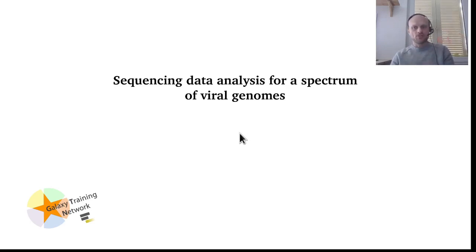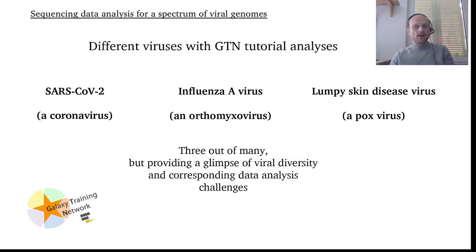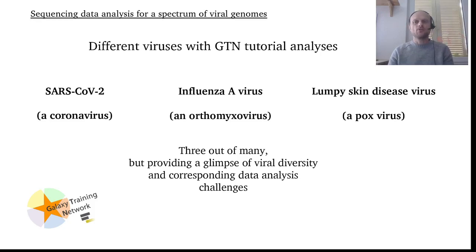The three viral pathogens with existing associated training in the GTN are SARS-CoV-2, Influenza A virus, and Lumpy Skin Disease virus — that's a pox virus infecting livestock animals. This is just three out of many viral pathogens you could potentially want to analyze with Galaxy, but it's a selection of rather important pathogens that also serves to demonstrate how diverse viral pathogens are and how each poses unique challenges to data analysis.